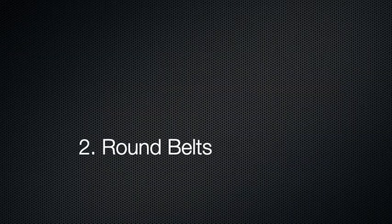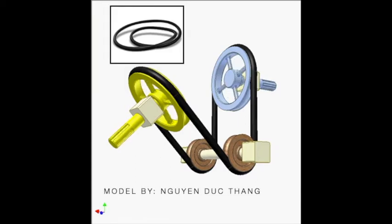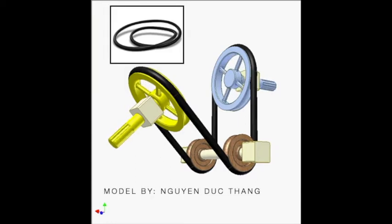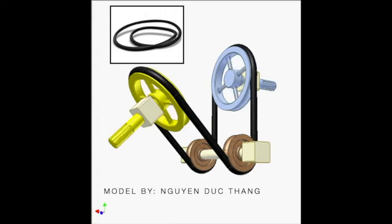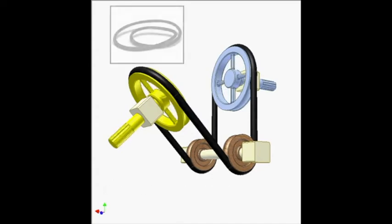2. Round belts are elastic O-ring bands. They are suitable for light load applications, such as instrumentation and sewing machines.